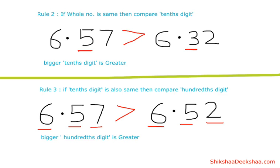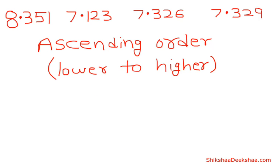Now let's take an example. Let's arrange these numbers in ascending order — meaning lower to higher. First we will compare the whole numbers. 8 is greater than 7, so that number is the biggest number.